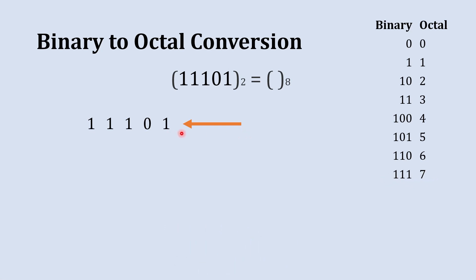From this side we'll start and we'll take a club of three digits. So this is the club of three digits: 101. Now we'll check the octal equivalent to this binary number and that number is 5. Binary 101 is equivalent to 5 in octal, so we'll write 5 below it.